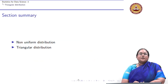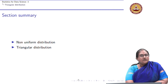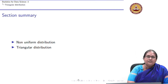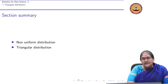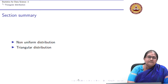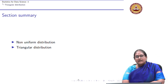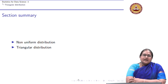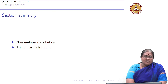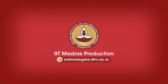In summary, without going into detailed mathematical expressions, we saw that other continuous distributions can arise naturally. We covered a non-uniform piecewise distribution and a triangular distribution where the density function has a triangular shape. Thank you very much.